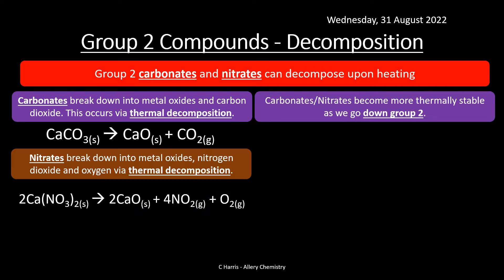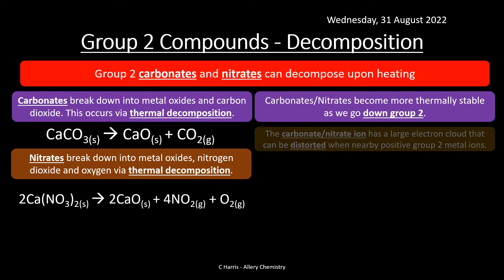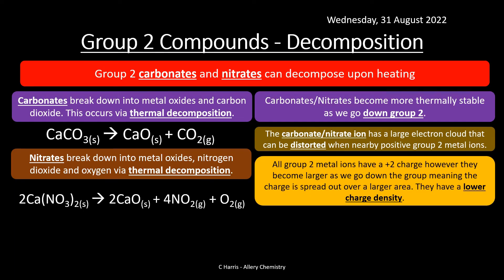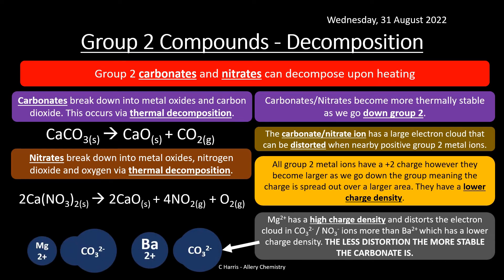Carbonates and nitrates become more thermally stable as we go down Group 2. The carbonate and nitrate ion has a large electron cloud that can be distorted when near a Group 2 metal ion. All Group 2 metals have a 2+ charge, but as we go down the group the ionic radius gets bigger. When that 2+ charge is spread across a larger ion, the charge density decreases, so it has less impact on a nearby carbonate or nitrate. Magnesium 2+ has a really high charge density — it's a 2+ charge on a small ion.